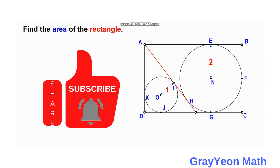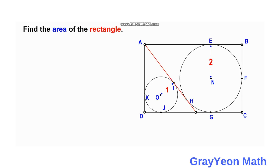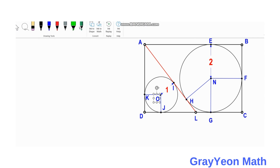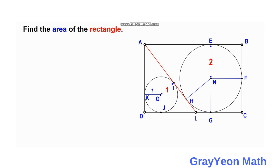We are required to find the area of the rectangle. The first thing we can do is connect the radii of both circles to their points of tangency. We then label each radius with its corresponding length. For the smaller circle, the radii are each one unit, and for the larger circle, the radii are each two units. By inspection, we can see that the width of the rectangle is four units, so W equals four.